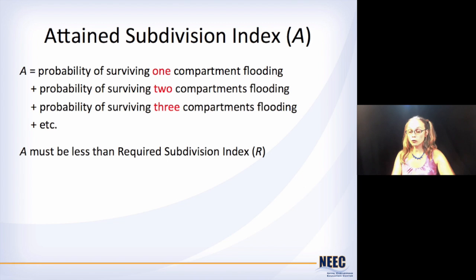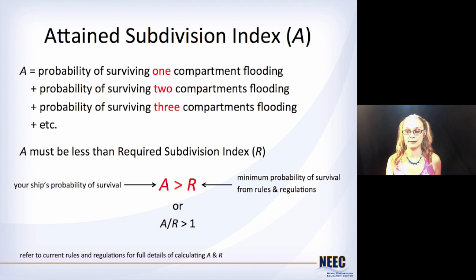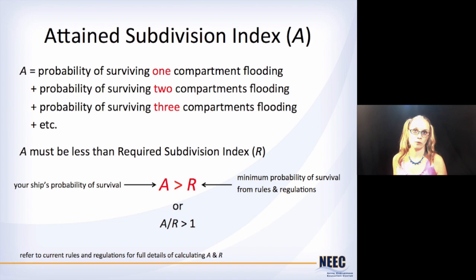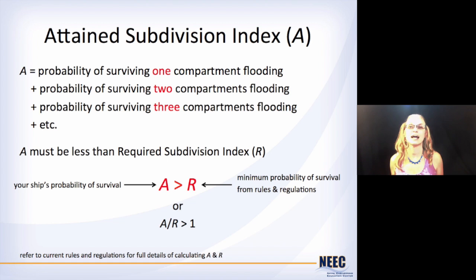The whole goal of the big giant tables is to come up with one number: the attained subdivision index, A. You take all the probabilities you just calculated, sum them all up, and that's got to be bigger than the required subdivision index, R. So you calculate your attained subdivision index A for your ship, and A must be greater than R — or equivalently, A divided by R must be greater than one. The current rules and regulations for your ship will lay it all out in great detail, and it's not really that hard. It's just a lot of bookkeeping, a lot of numbers. Just be very detail-oriented and get somebody to double-check your numbers.